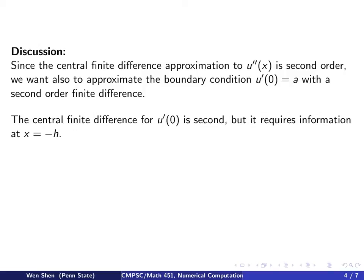A natural choice will be using the central finite difference for u', which is a second order method. But if we do so, it will require information at x = -h, which we don't have.